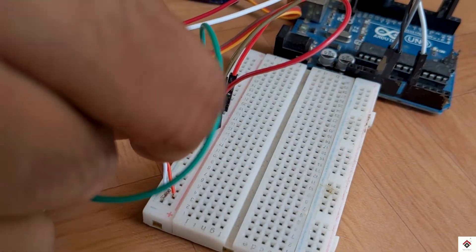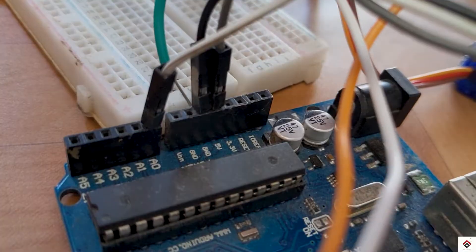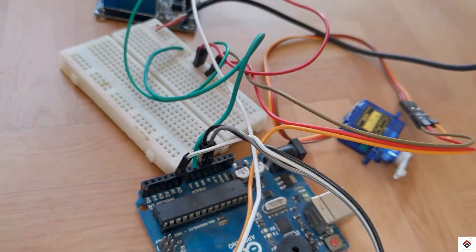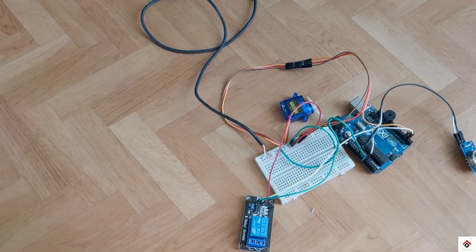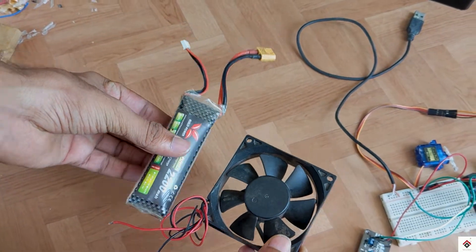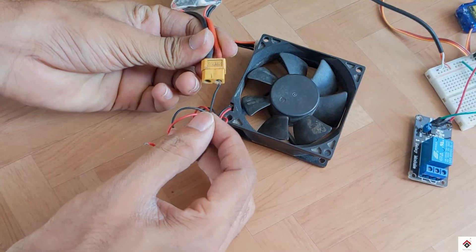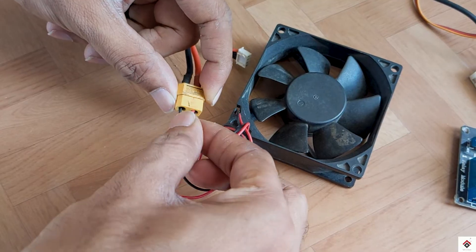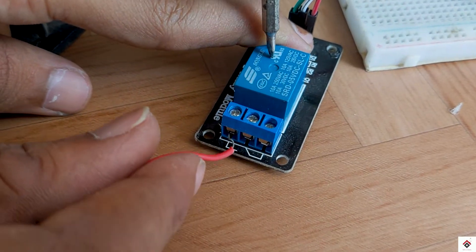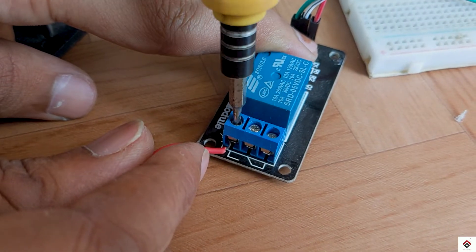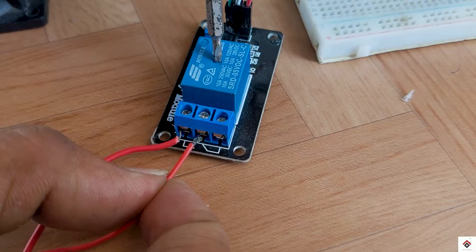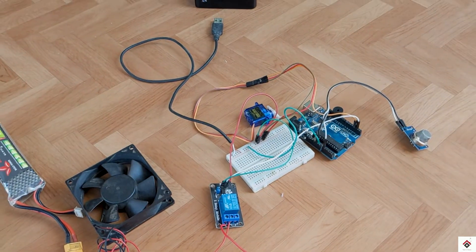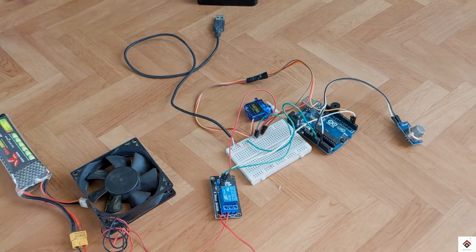Also, we have to connect the ground from the external 5 volts with the Arduino ground. At last, for the exhaust fan, the negative terminal directly connects to the battery negative. The positive terminal from the battery goes to N1 terminal of the relay module, and the positive terminal from the motor goes to common terminal. This is all about the connections. If you face any difficulties, you can refer to the provided circuit diagram below.